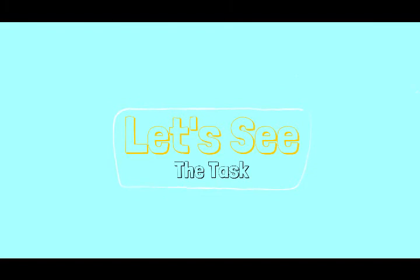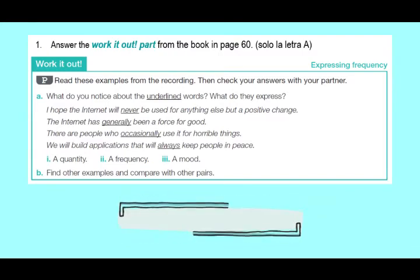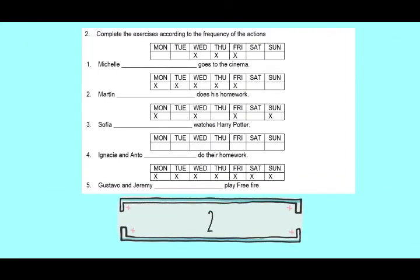So let's see the task. After reviewing the adverbs of frequency explanation, let's look at the homework. In the first part, you have to answer the 'Work it out' section from the book on page 60 — en la página 60 de su libro. You have to read the examples and answer only part A, which asks: what do you notice about the underlined words? What do they express — a quantity, a frequency, or a mood? You have to select one of those options.